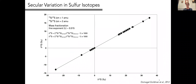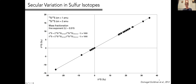Sulfur has four stable isotopes; I'll be talking about ³²S, ³³S, and ³⁴S today. ³²S is the most abundant at about 95%. The delta notation is simply a per mil deviation from a standard reference value. Most isotopic fractionations are caused by effects of the mass of an isotope on bond strengths, molecular velocities, or diffusivities, and so they should fall along a predictable trend related to mass differences. If we look at δ³³S versus δ³⁴S, they should fall on a line with a slope of about one-half.